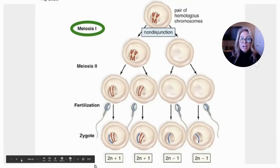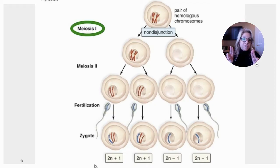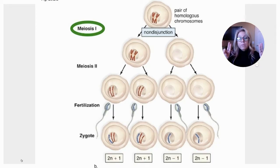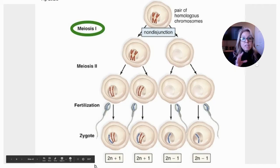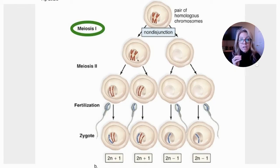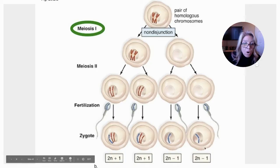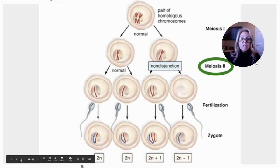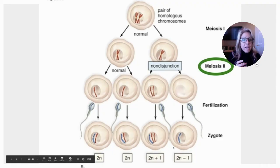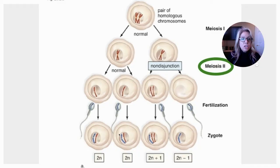Non-disjunction is failure to separate. Remember, in meiosis there are two divisions. In meiosis I, you're separating homologous pairs and forming two cells. In meiosis II, you're separating sister chromatids. If non-disjunction occurs in meiosis I — meaning anaphase doesn't happen correctly — the homologous pairs go together to one daughter cell and the other gets nothing. If this failure occurs in meiosis I, all gametes will be altered. If it happens in meiosis II, only half the gametes will be altered, and the other half should be fine. Non-disjunction is the failure of either homologous pairs or sister chromatids to separate.